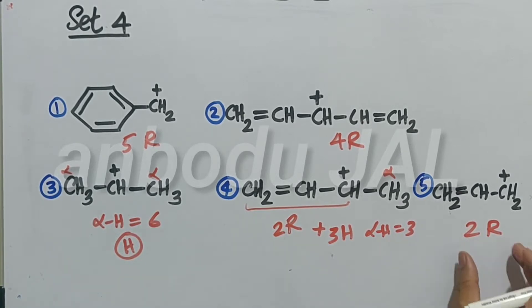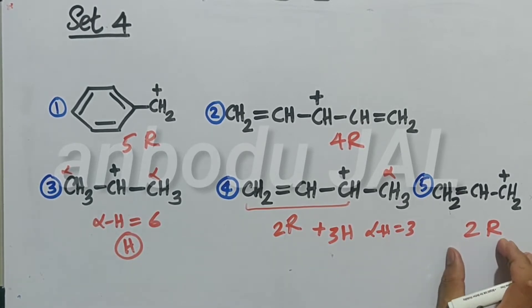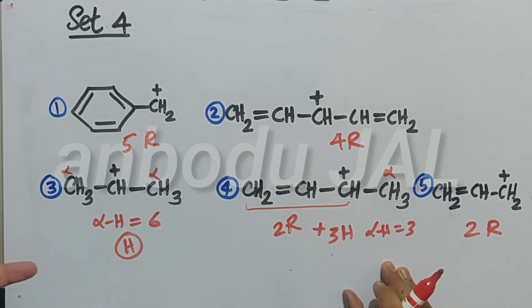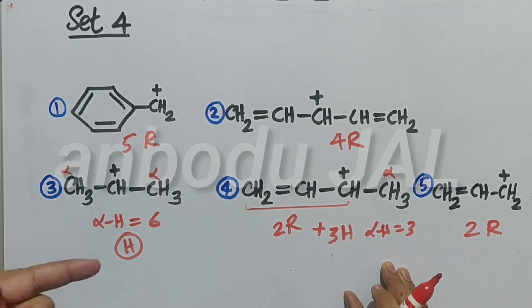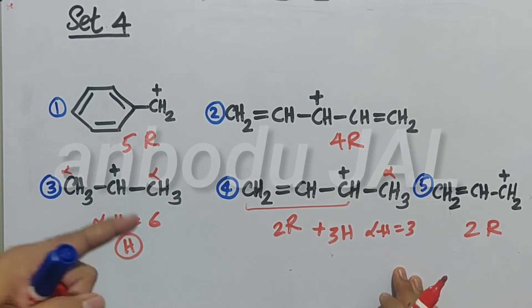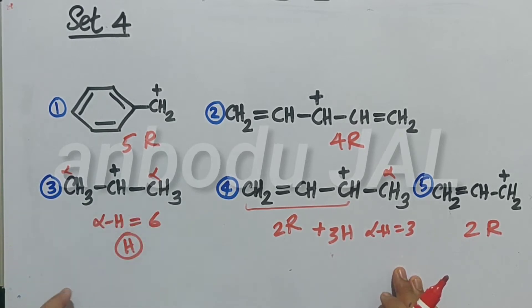Here, two resonance structures only. As the number of resonance structures increases, the stability of the carbocation increases, because the chance for delocalization increases.